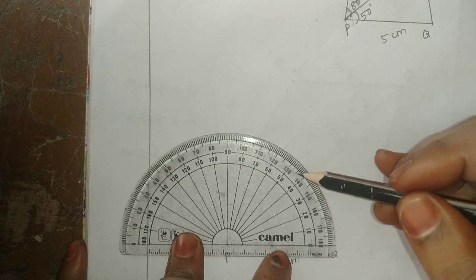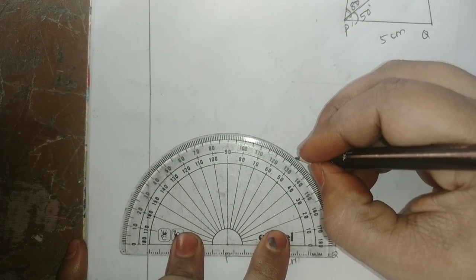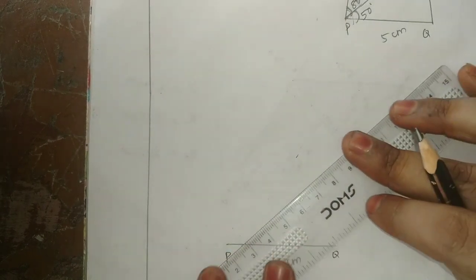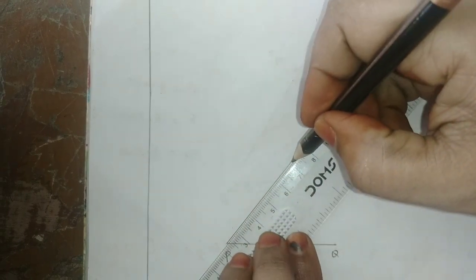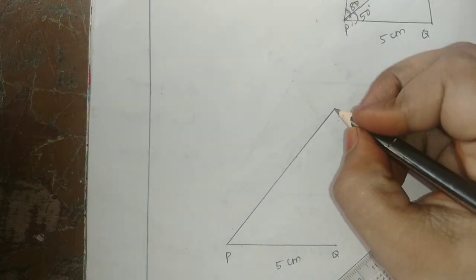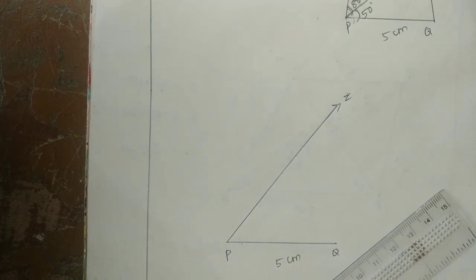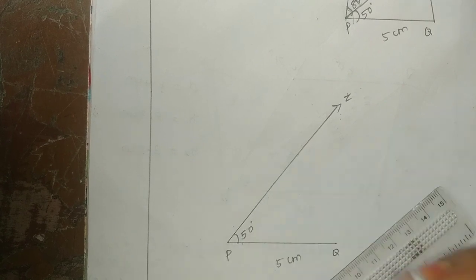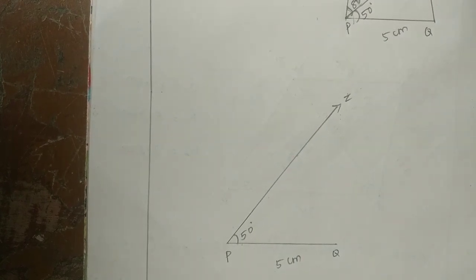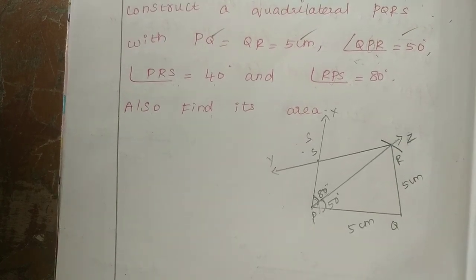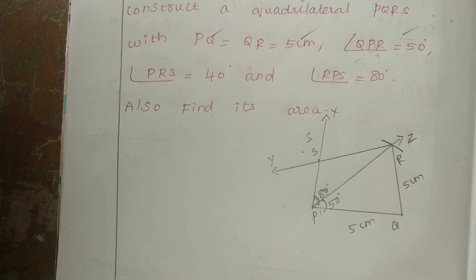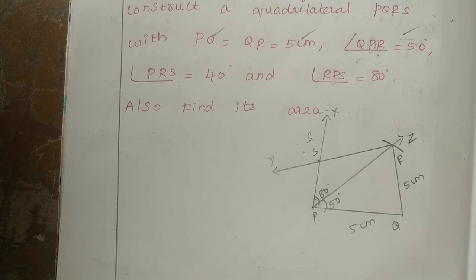The degree is 50. At point Q, place the protractor and mark 50 degrees. This gives us the direction for the diagonal PR. From Q, we cut QR equal to 5 centimeters. So QR is 5 centimeters, same as PQ.